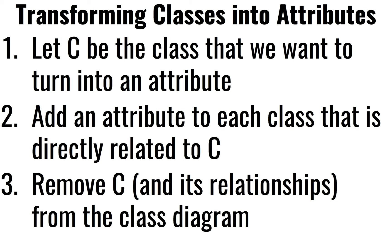If we're converting classes to attributes, there's a little algorithm for this. If you have a class that you want to remove because it's basically an attribute in somebody else's class, then you remove that class. But you now have to add attributes to those classes that the original class was associated with — that class might be associated to multiple other classes. So you need to add attributes to each one, and then remove all the relationships from the class you're removing.